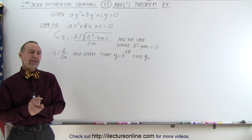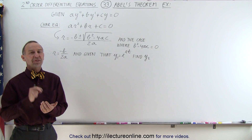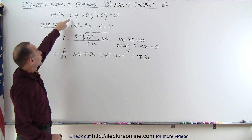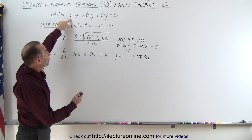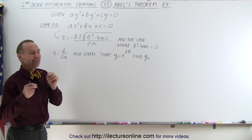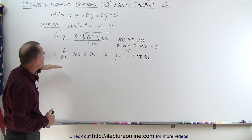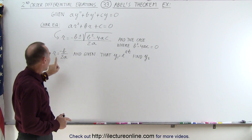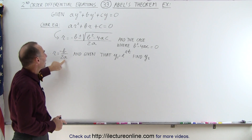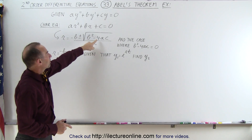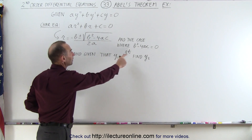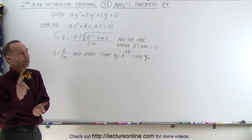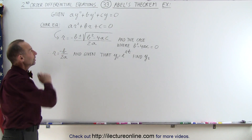Welcome to iLecture Online. We're now going to use Abel's Theorem and a few mathematical tricks to show that the general solution to this homogeneous second-order differential equation with constant coefficients can be found for the case where the characteristic equation has only one single repeated root equal to minus b over 2a, under the condition that b squared minus 4ac is equal to zero. We already know what that general solution looks like, but we're going to show how to derive it using Abel's Theorem.